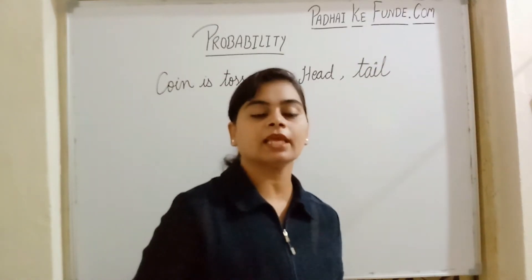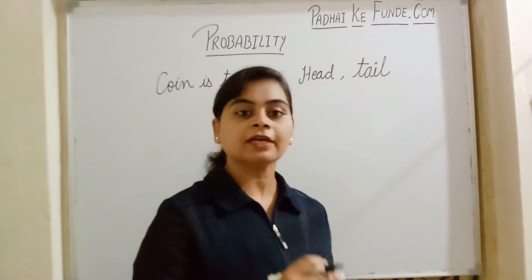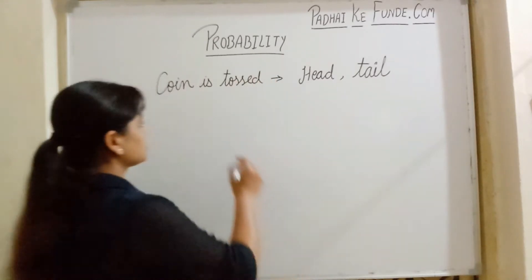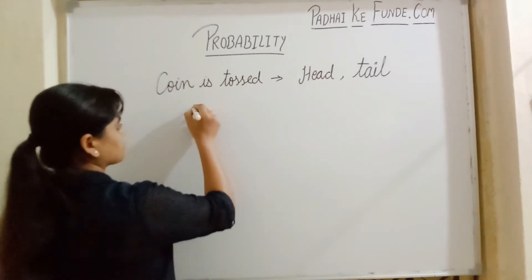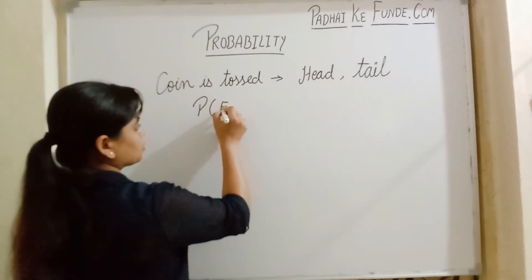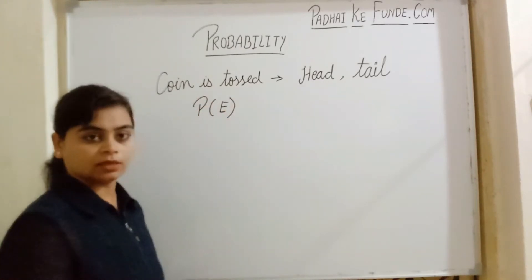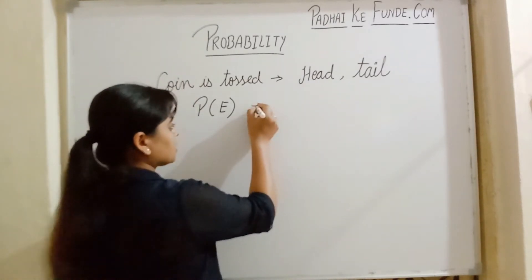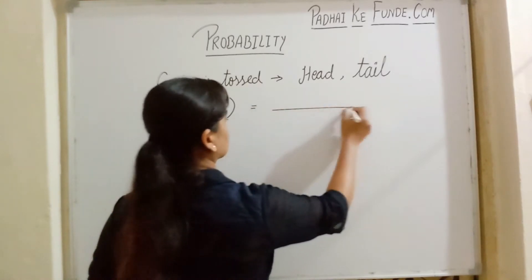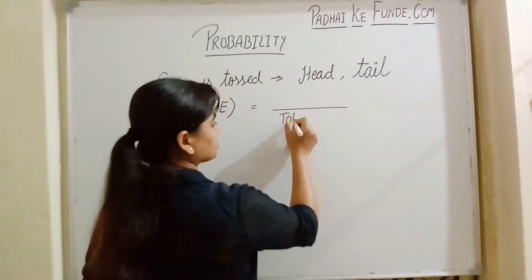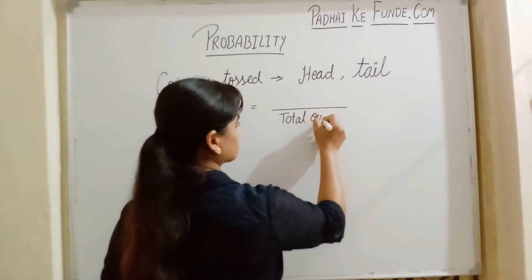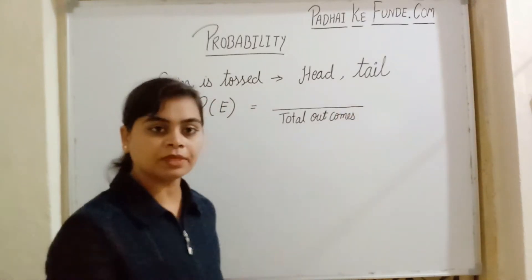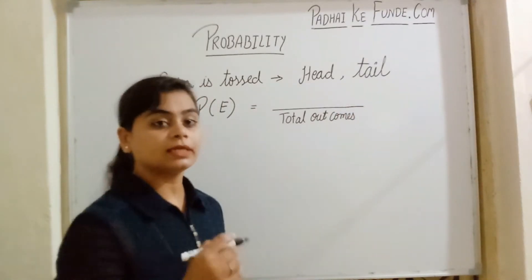If I talk about the probability of getting a head on the toss, we denote it as P(E), that means probability of an event. This is found by: in the denominator, the total outcomes, and in the numerator, the desired outcomes.